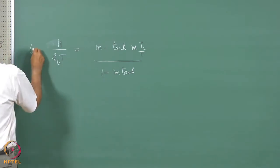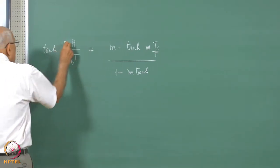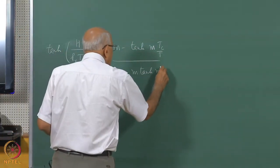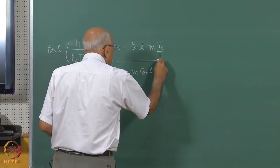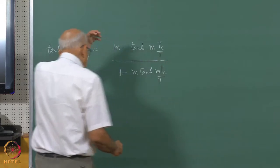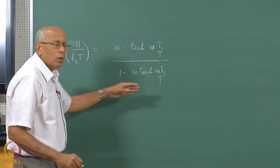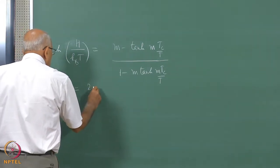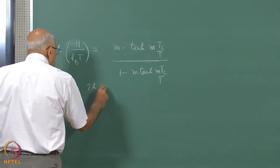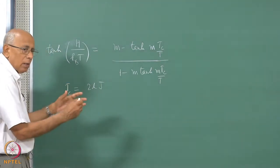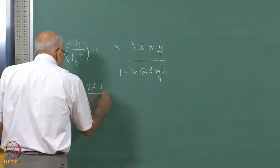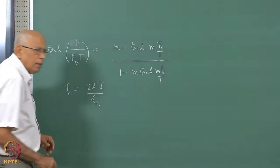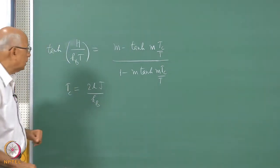The tanh is transcendental of the argument M·T_c/T, and T_c was equal to 2D times J, the exchange constant (coupling constant), divided by k_B.